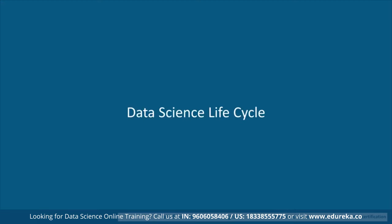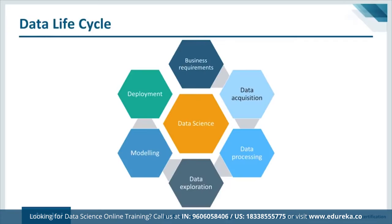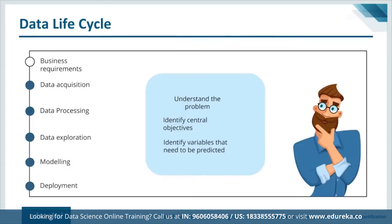Now let's move ahead and look at the data lifecycle. There are basically six steps: it starts with business requirement, then data acquisition, followed by data processing, data exploration, modeling, and finally deployment. Before you even start on a data science project, it is important that you understand the problem you're trying to solve. In this stage, you focus on identifying the central objectives of the project by identifying the variables that need to be predicted.